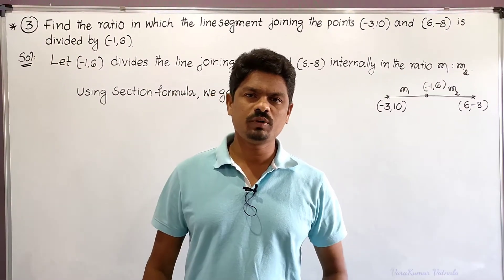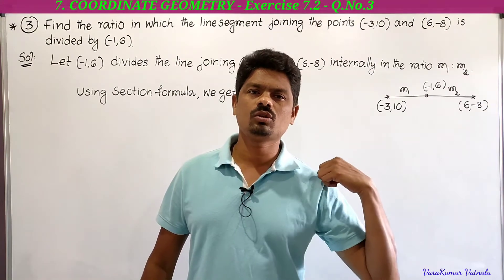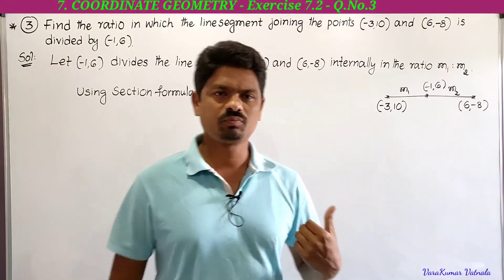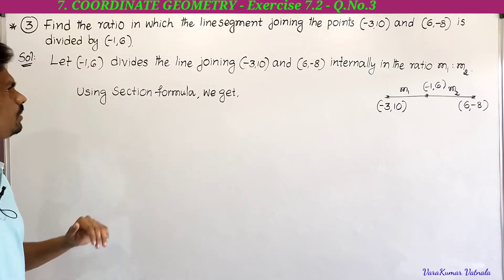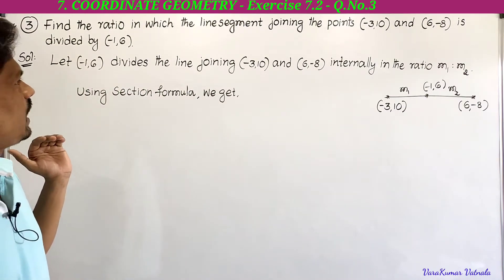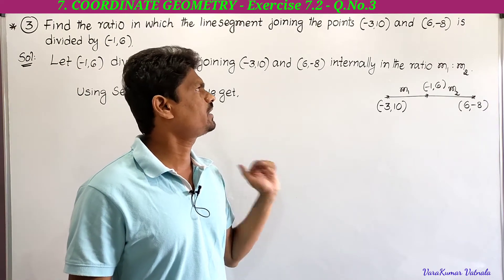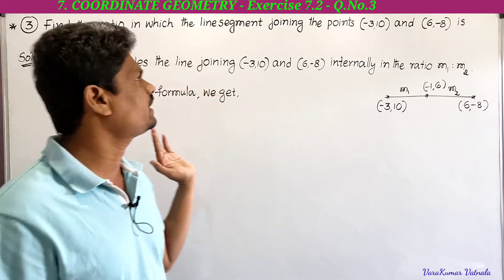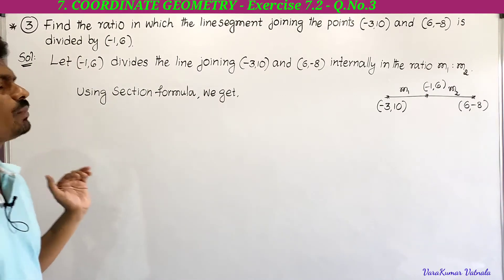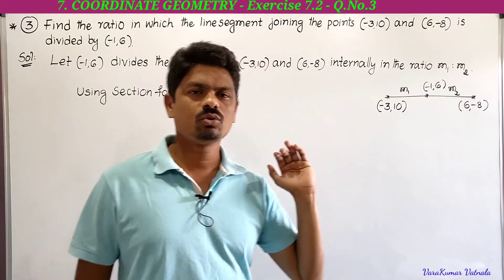Hi, hello, welcome to my channel Learn More Maths. Today we are going to solve a problem from Exercise 7.2. This is the third problem: find the ratio in which the line segment joining the points (-3, 10) and (6, -8) is divided by (-1, 6).